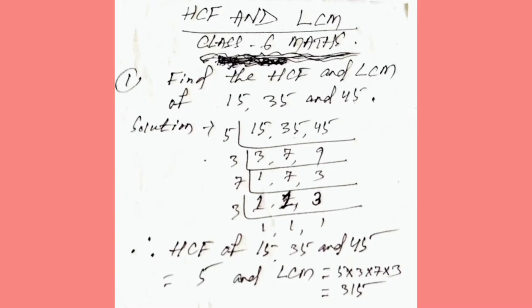Solution: 15, 35, 45. First we will divide by prime number 5, we will get 3, 7, 9. Then we will divide by 3, we will get 1, 7, 3. Then we will divide by 7, we will get 1, 1, 3. Then we will divide by 3, we will get 1, 1, 1.